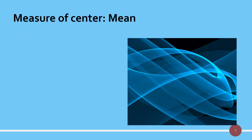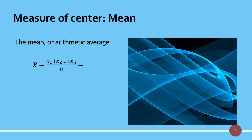The first measure of center is the mean. The mean, or arithmetic average, is given as x-bar, which is the total of all values divided by n. If we call those numbers x1, x2, x3, ... xn, we add them up and divide by n. So sigma from i=1 to n of xi, divided by n, is our mean, denoted by the symbol x with a bar on top.